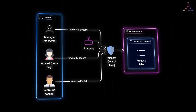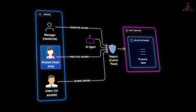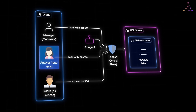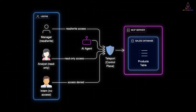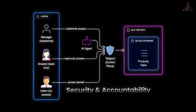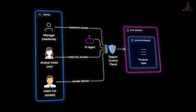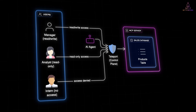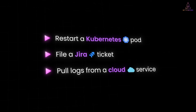Later, if a security engineer or auditor reviews activity, they can see a full trail of what happened — Alice's successful query tied to her identity, Bob's denied attempt also tied to his identity. This gives both security and accountability. You know exactly who asked for what, even when it came through an AI. The same workflow applies if the AI tries to restart a Kubernetes pod, file a Jira ticket, or pull logs from a cloud service. Teleport mediates every step, ensuring the AI only operates within defined guardrails.